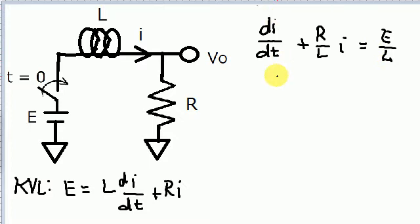Now we want to look at the zero input response, and so what that implies is that this E/L term, which is called the forcing function, will be zero. So we have dI/dt plus R/L times I equals zero.